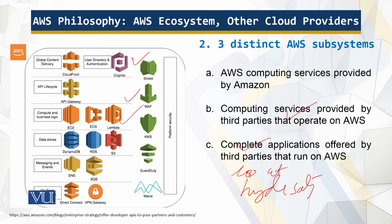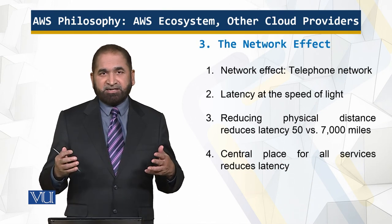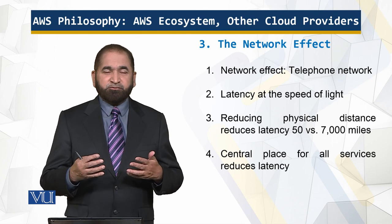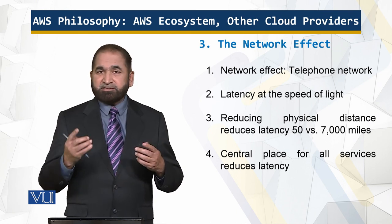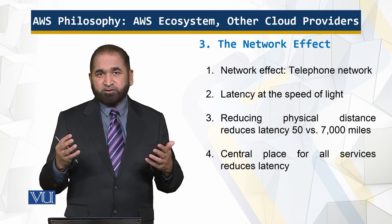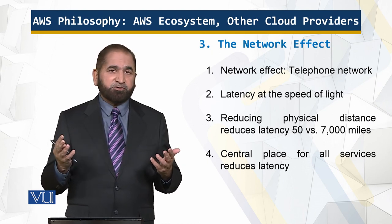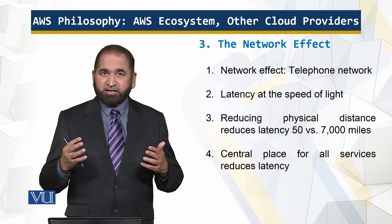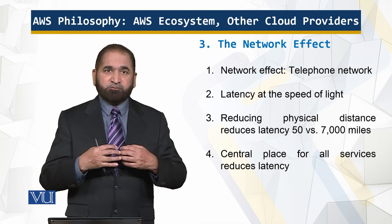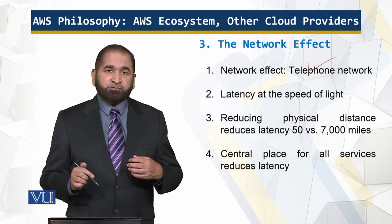The network effect means that as people connect, they add value to the network. If two people connect there is one link, but if four people connect there are six links. For example, one telephone in a town is not very useful — the more people who have a telephone, the more people you can call and the more valuable the network becomes.